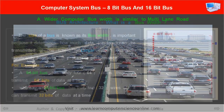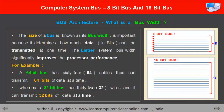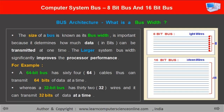Let us now summarize. The computer bus width is the number of bits transmitted in a single operation. In other words, larger the bus width, better will be the computer's processor performance.